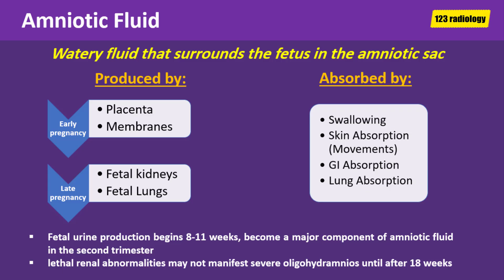It is important to note that fetal urine production begins between 8 and 11 weeks, but it does not become a major component of amniotic fluid until the second trimester. This explains why fetuses with lethal renal abnormalities may not manifest severe oligohydramnios until after 18 weeks.